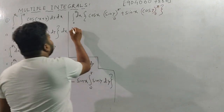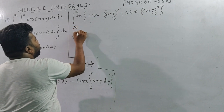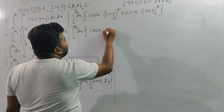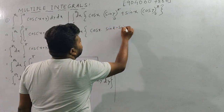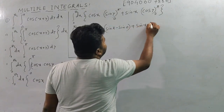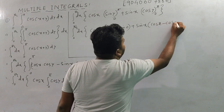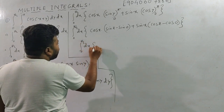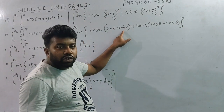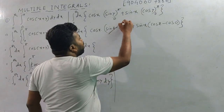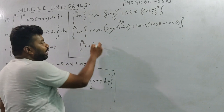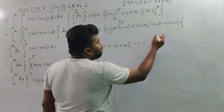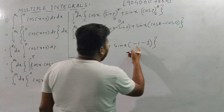Applying limits 0 to π: cos x times [sin π − sin 0] plus sin x times [−cos π + cos 0]. sin π = 0 and sin 0 = 0, so the first term is 0. For the second: sin x times [−(−1) + (−1)] = sin x times [1 − 1 + ... ] = sin x times (cos π − cos 0) = sin x times (−1 − 1) = −2 sin x.